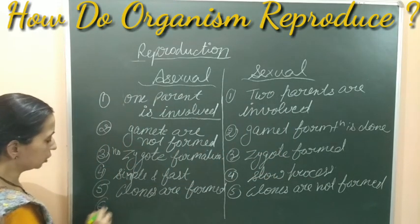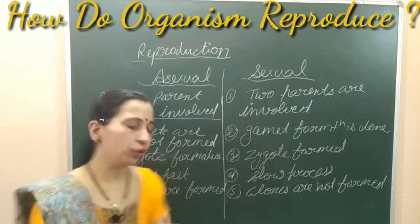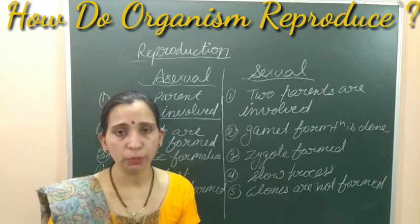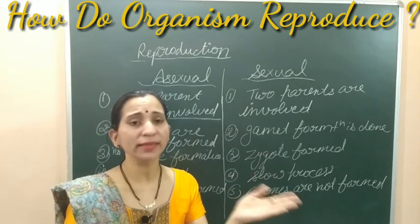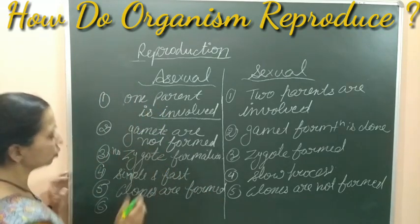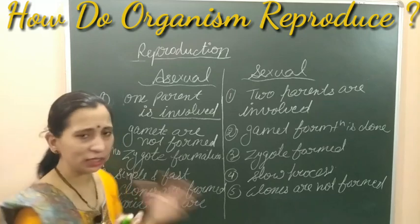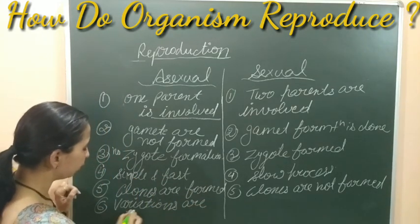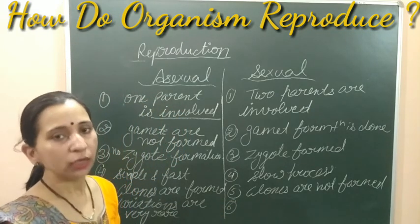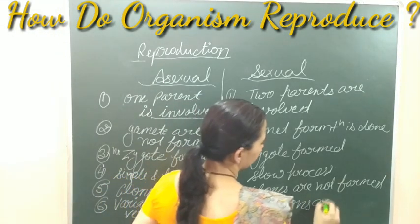The next difference is about variations. Variations mean differences between parents and offspring. In asexual reproduction, chances of variation are very rare — the offspring are almost identical to the parents. In sexual reproduction, because the gametes of both mother and father mix together, the chances of variation are very high.